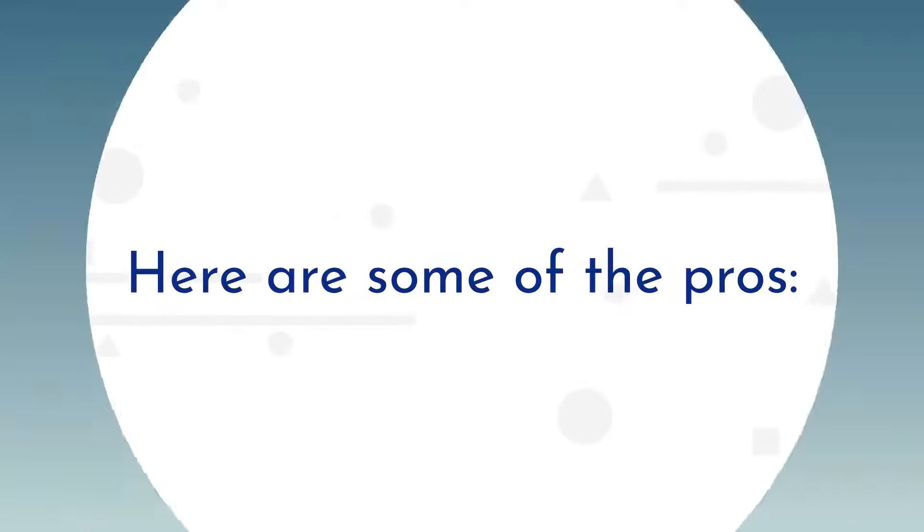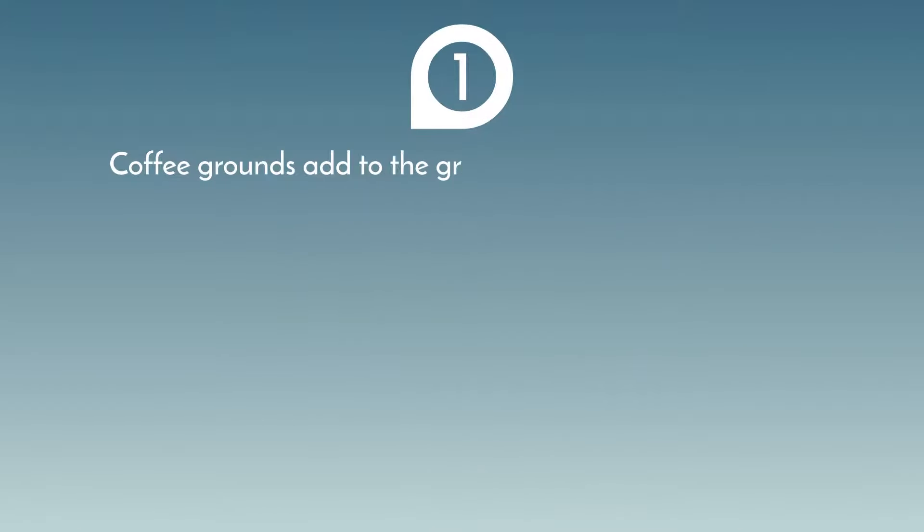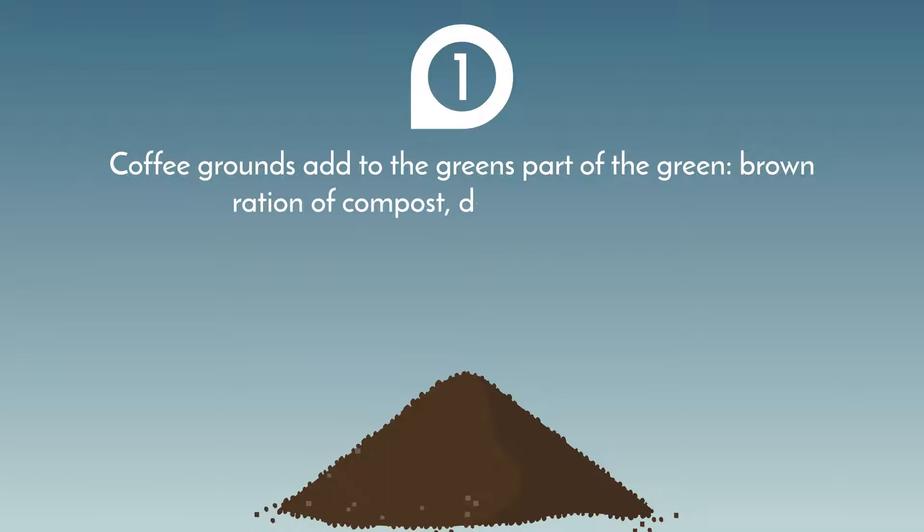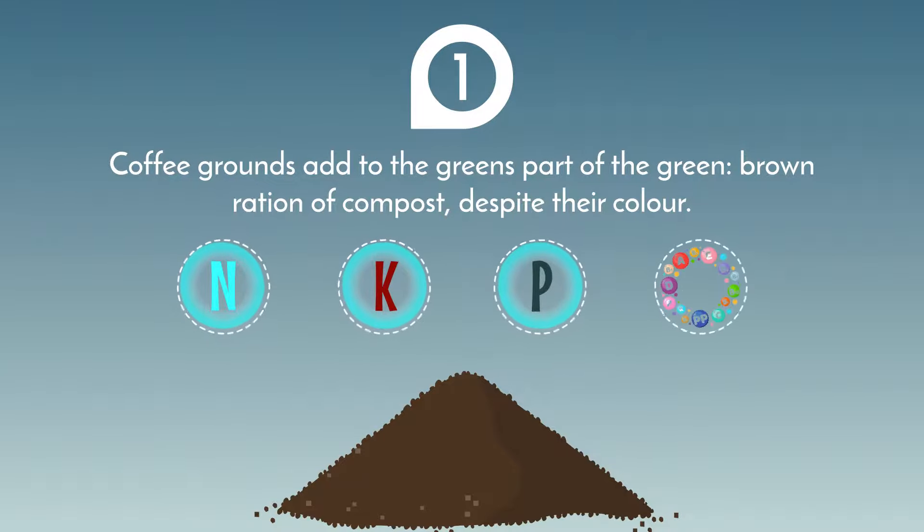Here are some of the pros. Coffee grounds add to the greens part of the green-to-brown ratio of compost, despite their color. They contain essential amounts of nitrogen, as well as potassium, phosphorus, and other micronutrients.